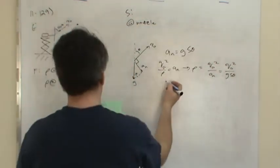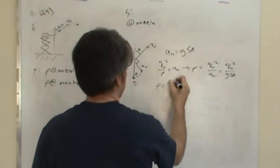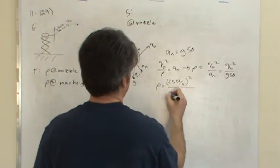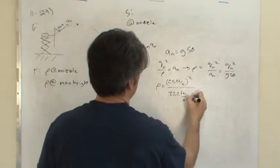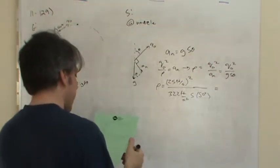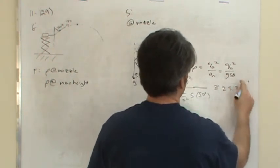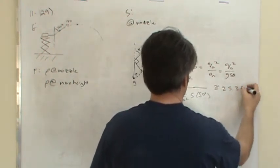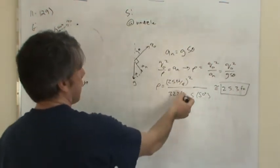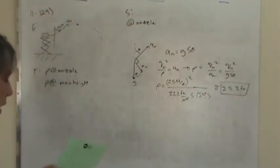Plugging in the numbers: 25 feet per second squared, divided by 32.2 feet per second squared times sine of 50 degrees. The radius of curvature is about 25.3 feet. Notice the units work out — feet squared over feet gives just feet. So that's the radius of curvature where the water leaves the nozzle.